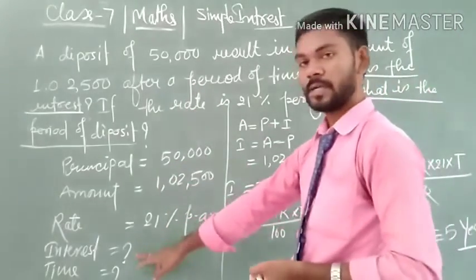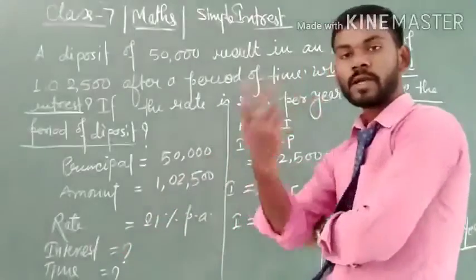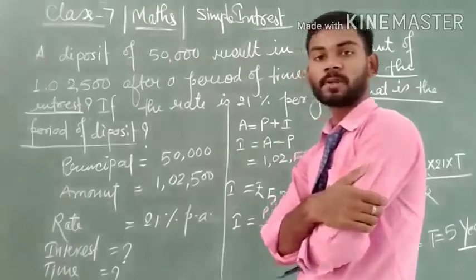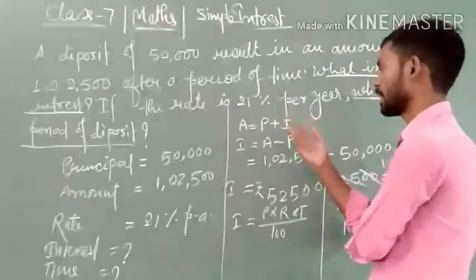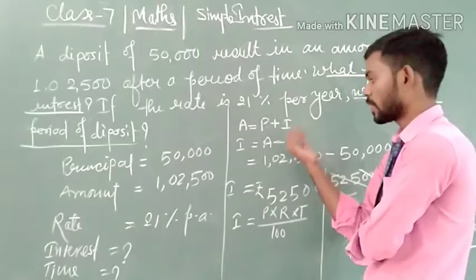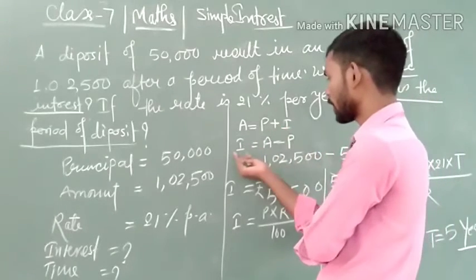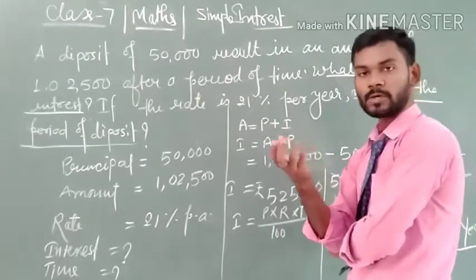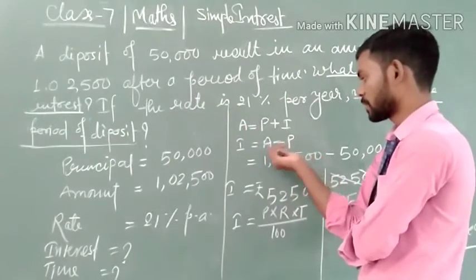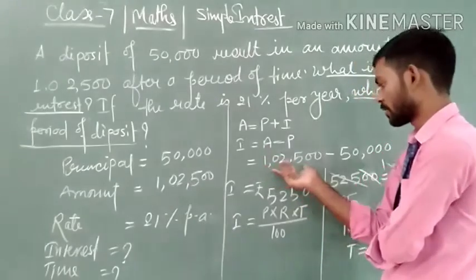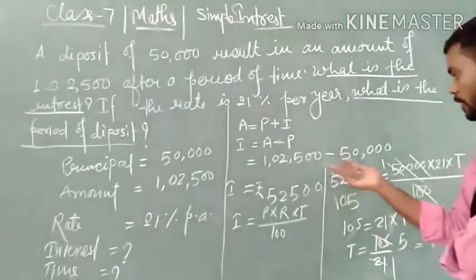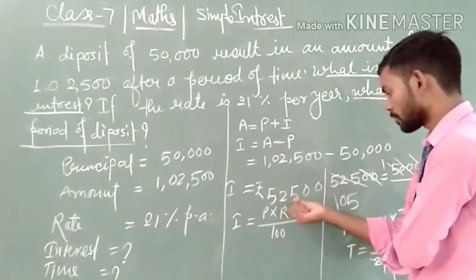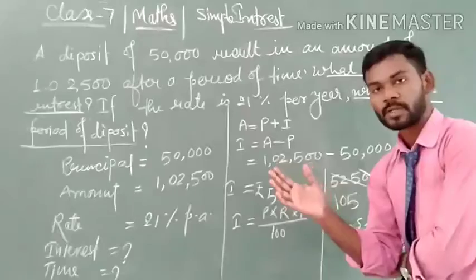So first of all, we write the data as given in the question. Now the first step is to find the interest. In order to find the interest, we know the formula: amount is equal to principal plus interest, that is A = P + I. Therefore, I is equal to A minus P. Since amount is greater than principal, we subtract principal from the amount. Hence, 1,02,500 minus 50,000 gives us 52,500, which is the interest money.